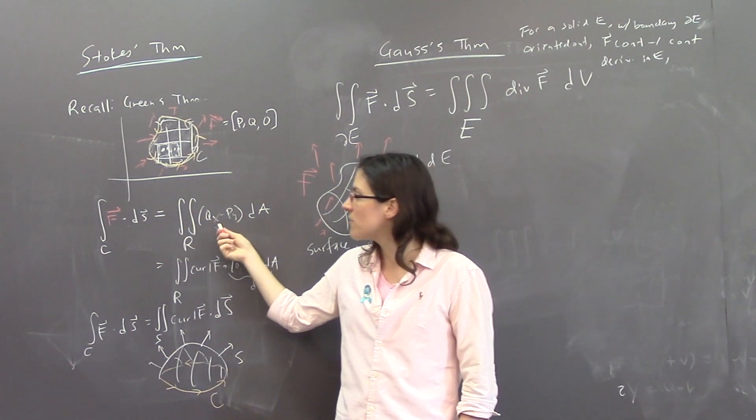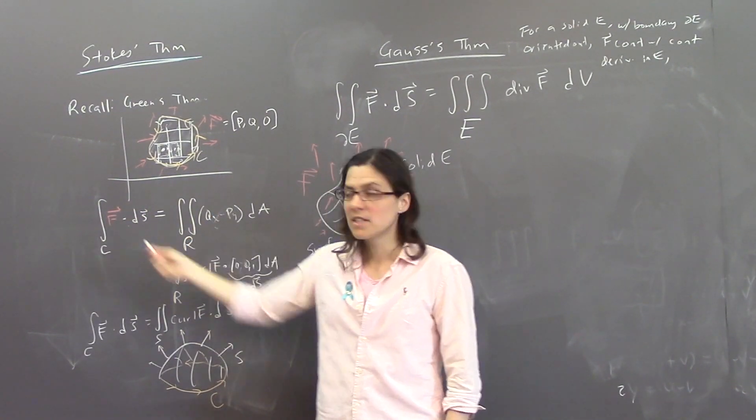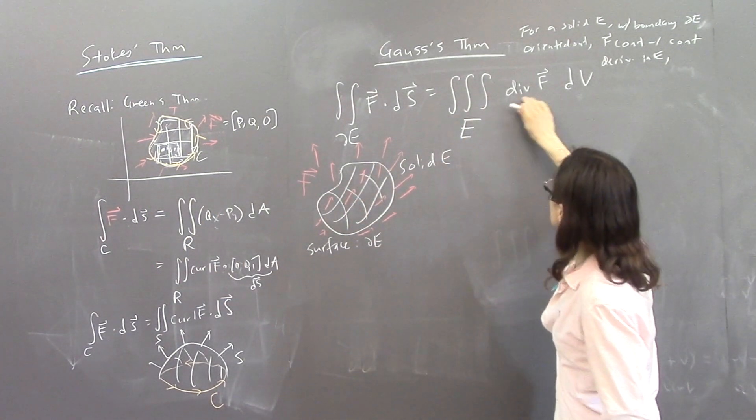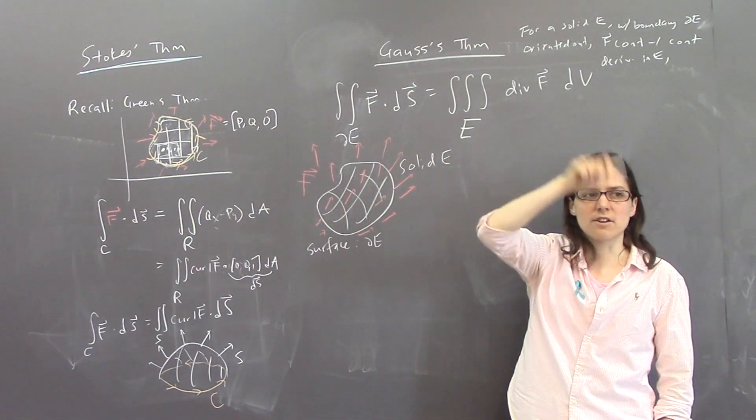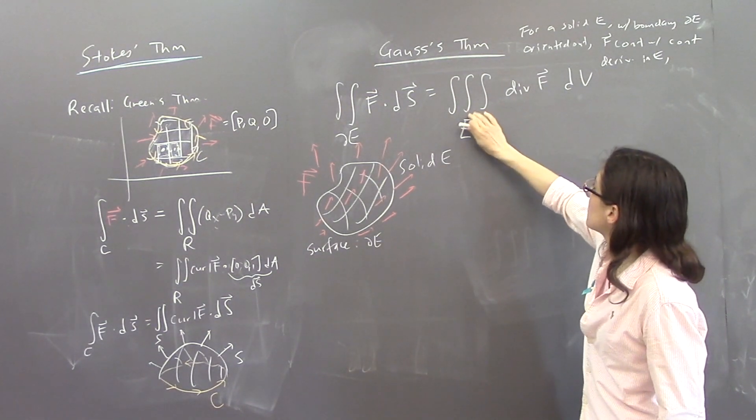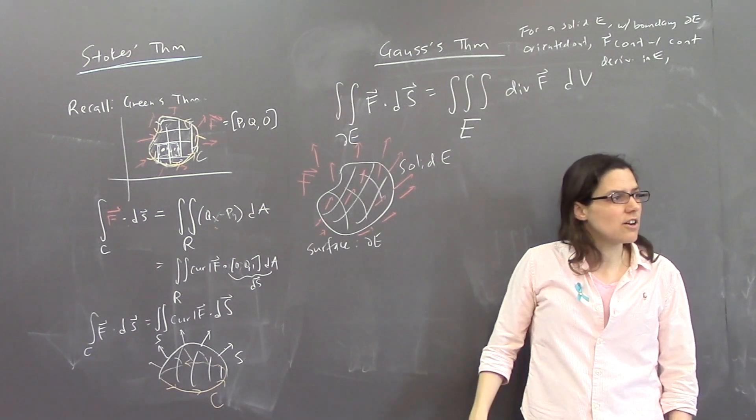you get the, if you double integrate the derivative, you get the original function. And then over here, this is also a derivative, divergence is, like, Px plus Qy plus Rz, so you're taking the derivative of everything. You do a triple integral of the derivative, it's the same as a double integral of the original.